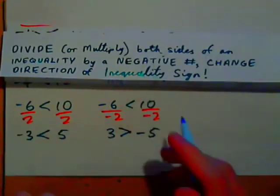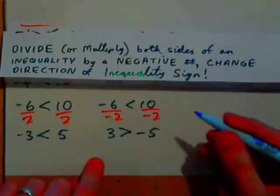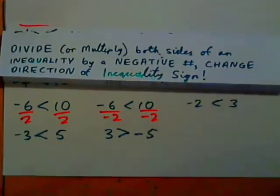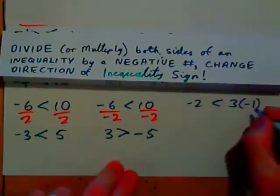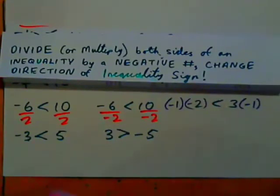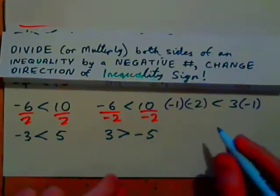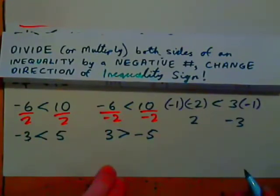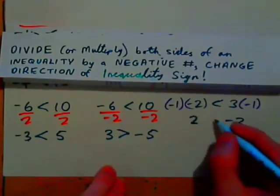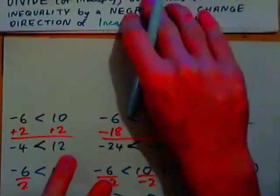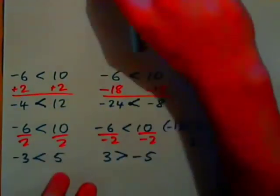That only applies to dividing or multiplying both sides by a negative. For example, negative 2 is less than 3. Multiply both sides by negative 1: on the left you get positive 2, on the right negative 3. Now 2 is greater than negative 3, so yes — you change the direction of the sign. We'll usually just be dividing by a positive or a negative in practice.